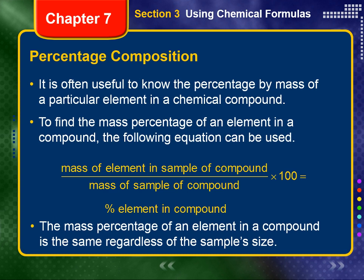To find the mass percentage of an element in a compound, one can divide the mass of the element in the sample of the compound by the total mass of the sample, then multiply this value by 100.